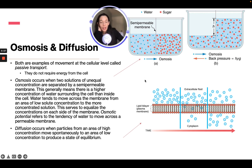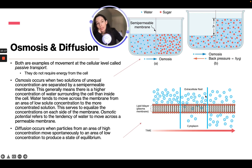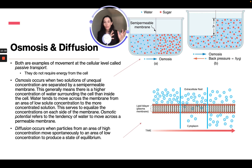Diffusion occurs when particles from an area of high concentration move spontaneously to an area of low concentration. The particles diffuse through the membrane until they are equal on both sides. Think of diffusion as the movement of particles from wherever concentration is high toward wherever it is low, until both sides are balanced.